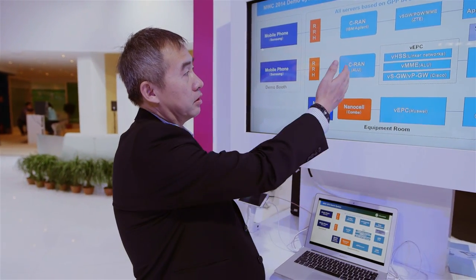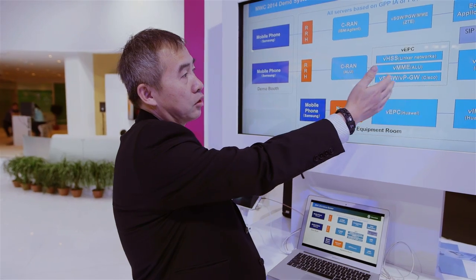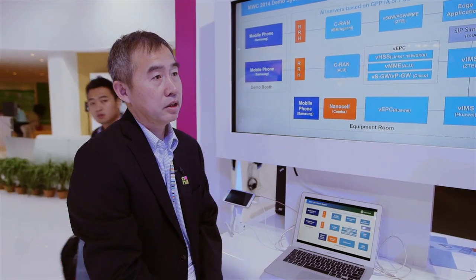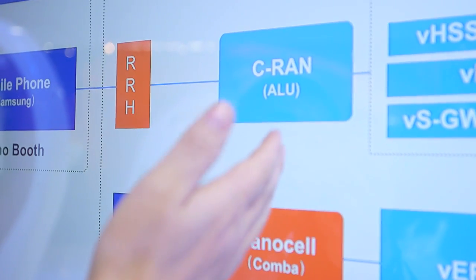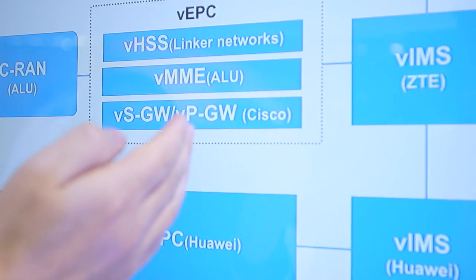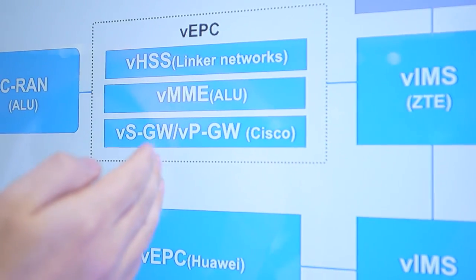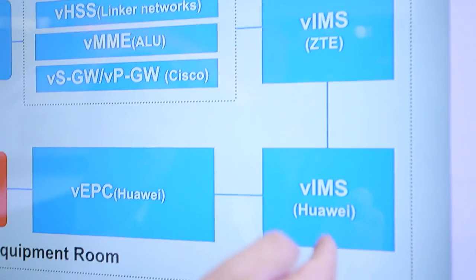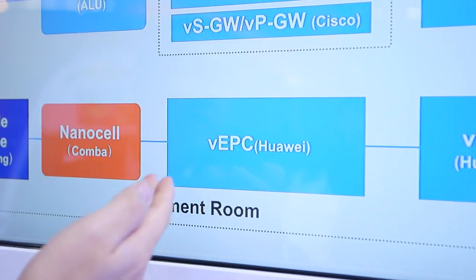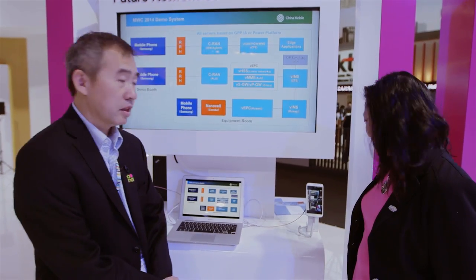Here we are showing the entire LTE mobile network running in a virtualized environment. We have access, core network, and IMS all running in a virtualized environment — network function virtualization. So we have the call coming from one mobile phone, going through the whole network and into another network and ending up in the equipment room. And you can see this is a live demo.